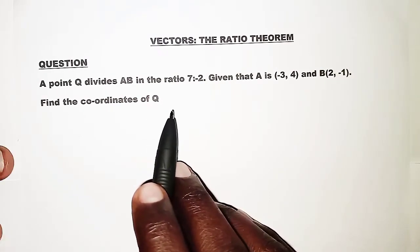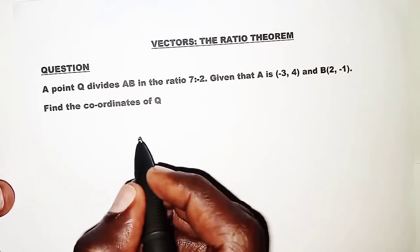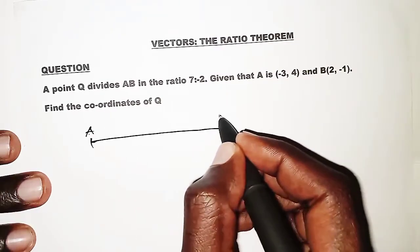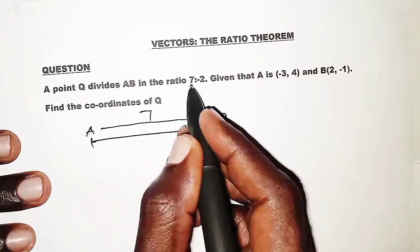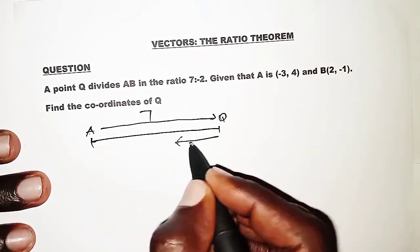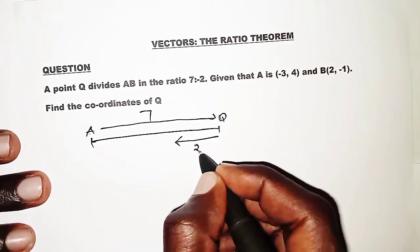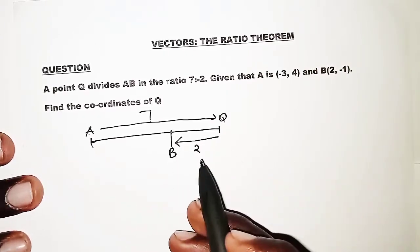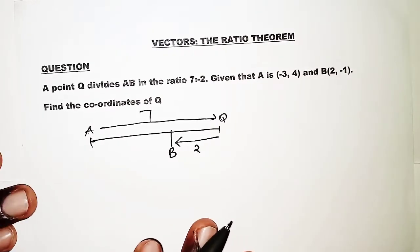We interpret this as follows. From A up to point Q, we are told that is 7 units. Then from Q to B, the negative sign shows that we are moving in the opposite direction, so we move two steps up to point B. With that interpretation we can now apply the ratio theorem.